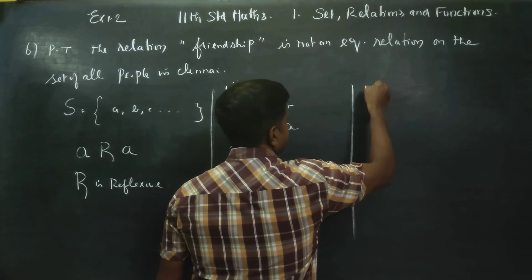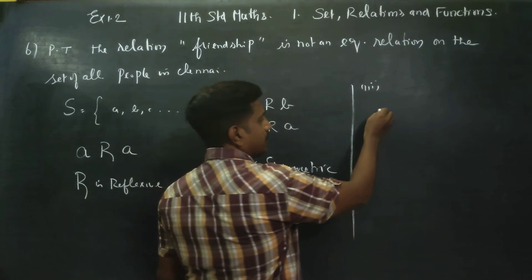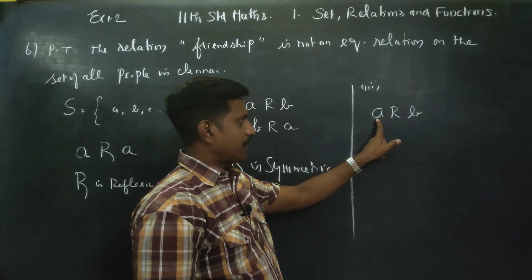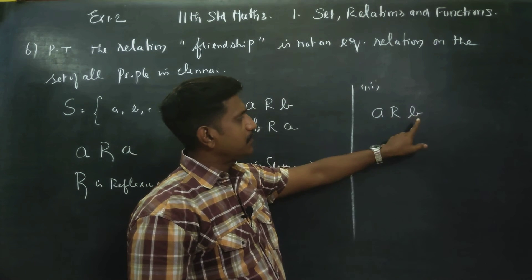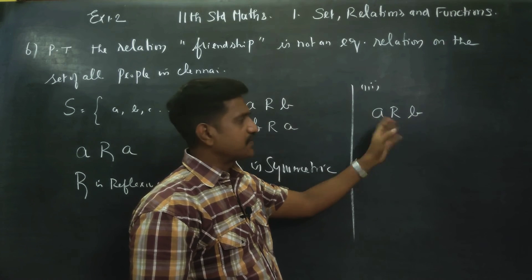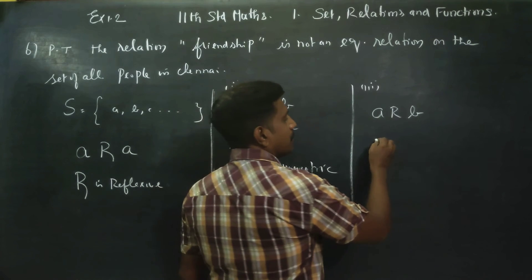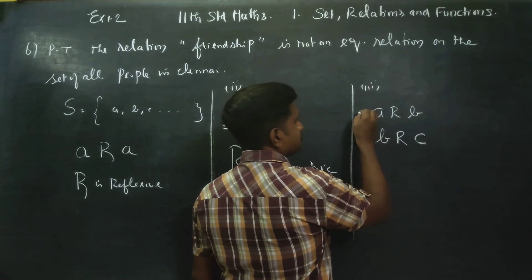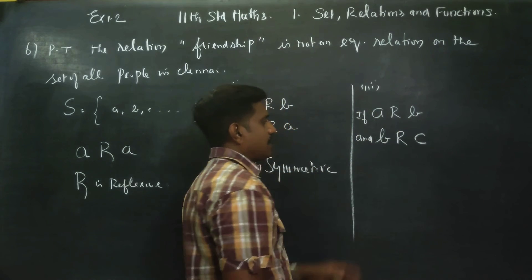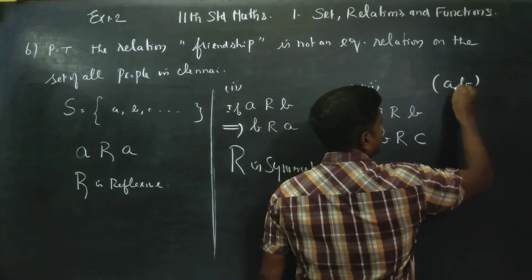Third, check transitive. If A is a friend of B, and B is a friend of C, is A necessarily a friend of C? Transitive would require that A is also a friend of C.